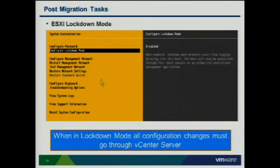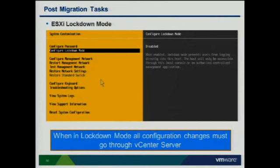Lockdown mode is important for deployment considerations. Lockdown mode limits host access to only people coming through the vCenter client, preventing backdoor console access. This ensures all actions get logged through vCenter. It's particularly useful when servers are in different parts of the country where you don't have control over who has physical access. By default, lockdown mode is turned off. Enable it by going into the DCUI and selecting lockdown mode, or enable and disable it through the vCenter client.